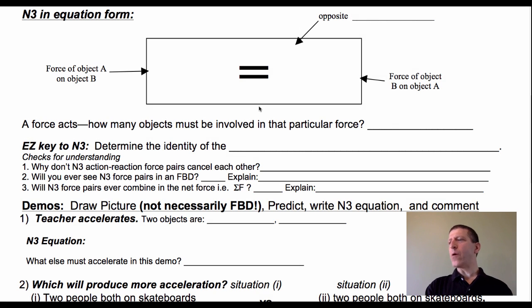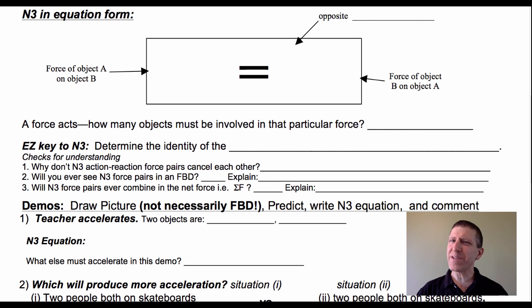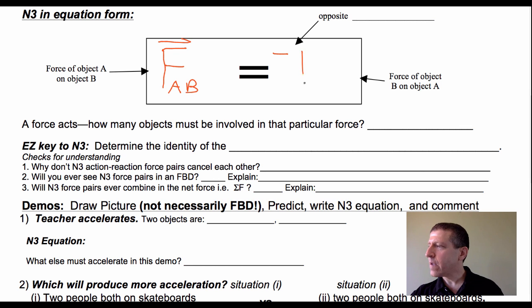Let's briefly talk about Newton's third law, probably the most misunderstood law of all of Newton's laws. Some people say every action has an equal and opposite reaction, but that's not as clear as what we can express. Newton's third law can be expressed this way: the force of object A on object B is equal to the opposite of the force that object B exerts on object A.